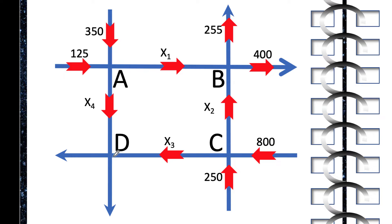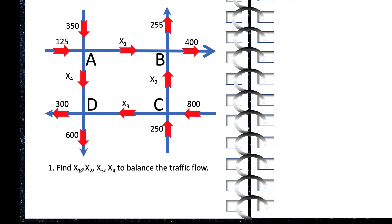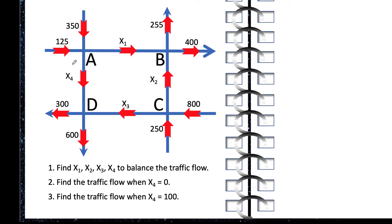And all of those cars coming into intersection D can exit in two ways, one going west at 300 cars per hour and the other going south at 600 cars per hour. The question is: find the values of x1, x2, x3, and x4 in order to balance the traffic flow. Number two, let's say there is construction happening between intersection A and D and we close this road, meaning the value of x4 is zero — what would be the effect on the flow of traffic to the other three intersections? And number three, find the flow of traffic if we limit the number of cars that can enter road AD to a rate of 100 cars per hour.